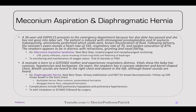A 36-year-old G6P4 mom presents past her due date and is induced with intravaginal prostaglandins and IV oxytocin. Amniotomy yields dark brown discoloration of fluid. Following delivery, the neonate has heart rate 165, respiratory rate 70, oxygen sat 87%, and is in distress with retractions, grunting, and nasal flaring — meconium aspiration syndrome. The next best step is oropharyngeal and nasopharyngeal suctioning. Chest x-ray may show patchy infiltrate with coarse streaking in both lung fields and flattening of the diaphragm. Treatment is monitoring and maintenance of oxygen status; a trial of steroids or PDE inhibitors can be considered.